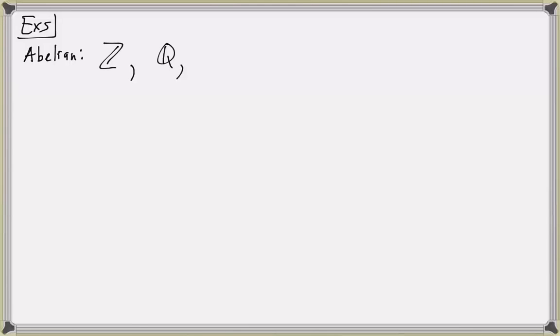Some common examples of groups: some abelian groups consist of the set of integers under addition, and the set of integers mod N, which is also a group under addition. We denote the cyclic group of order N by Z sub N, which is also an abelian group.